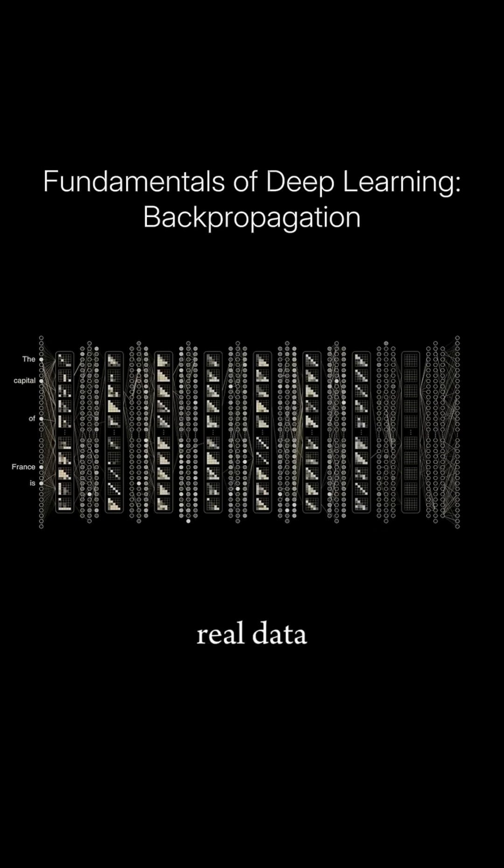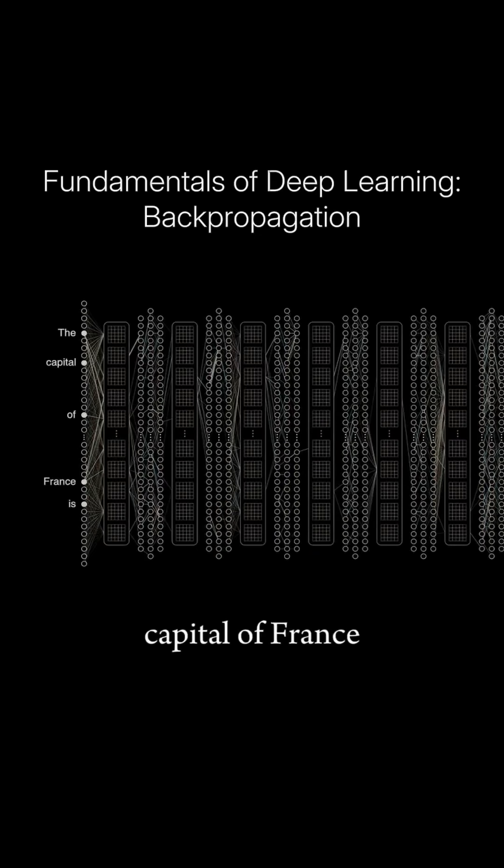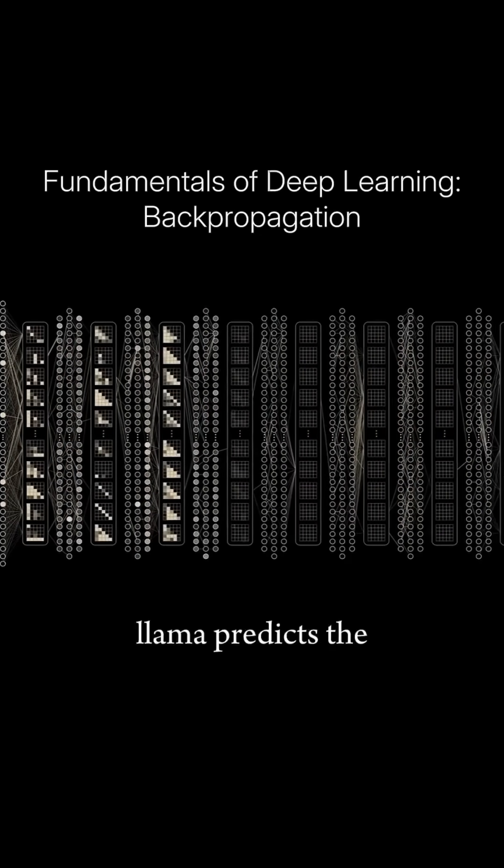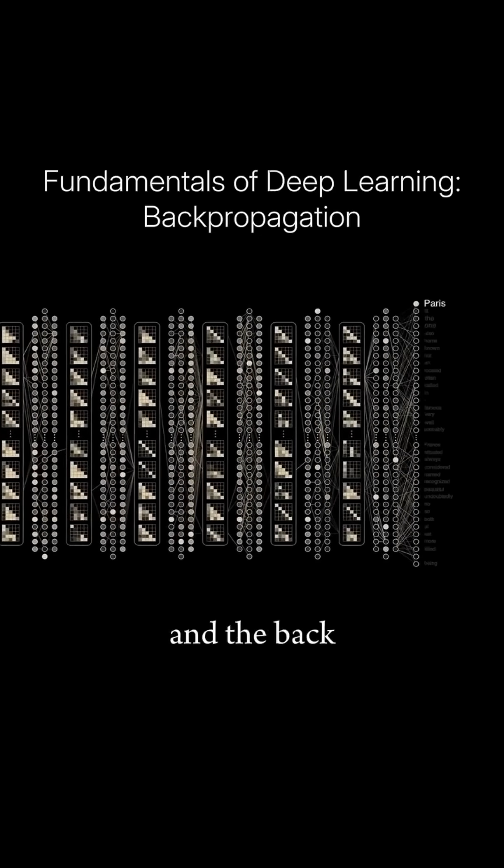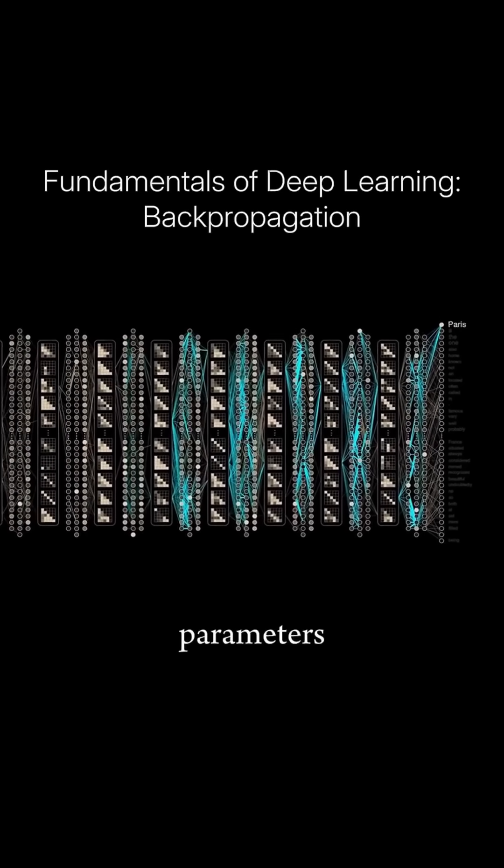This animation shows the flow of real data through Meta's LLAMA 3.2 large language model. Given some input text, like the capital of France is, LLAMA predicts the token that will come next, and the backpropagation algorithm figures out how to update each of the model's 1.2 billion parameters.